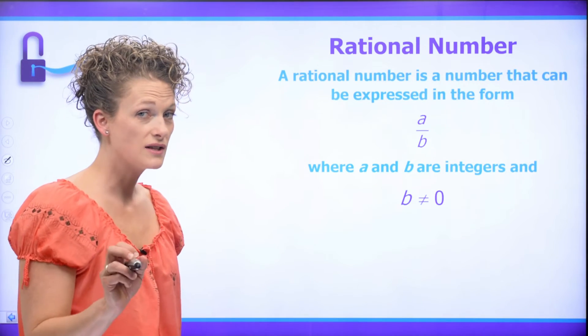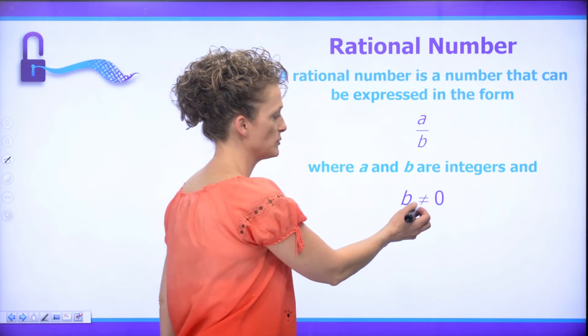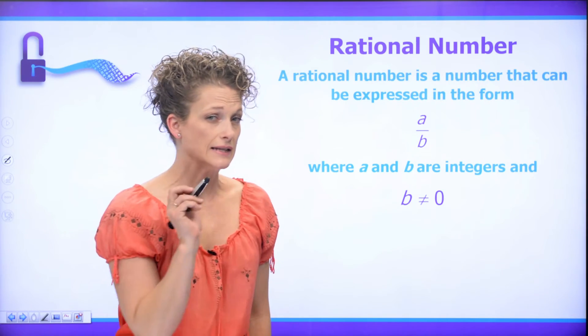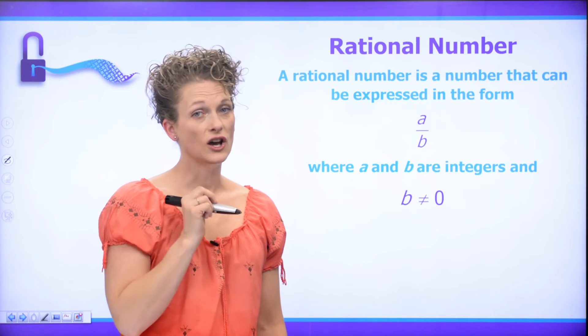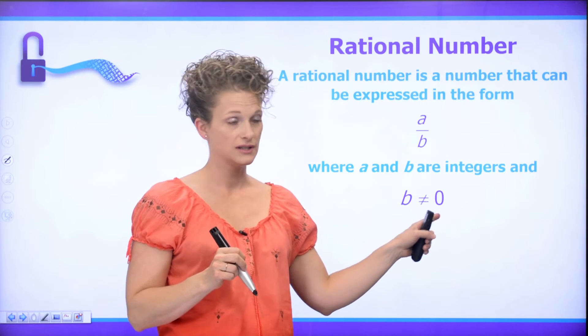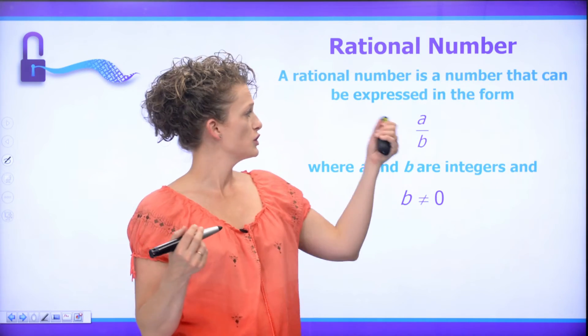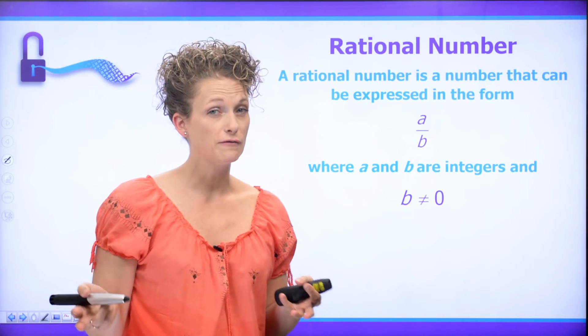So now that we know not to divide by zero, I just want to draw your attention to this funny little symbol. This funny little symbol that has an equal sign with a slash through it, that means does not equal. So that's telling us that B does not equal zero. So if you look at this A over B, it probably looks like something you've seen before. It looks a little bit like a fraction.